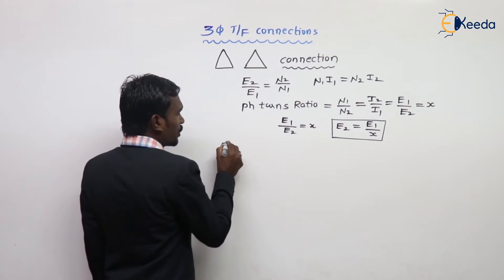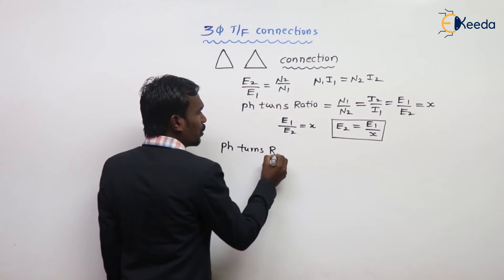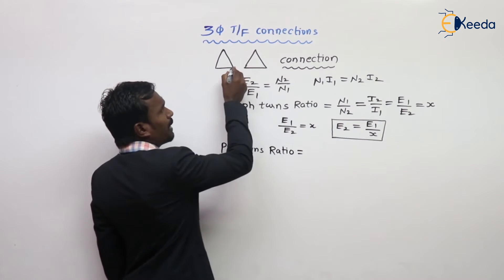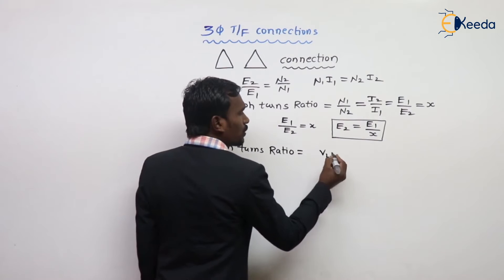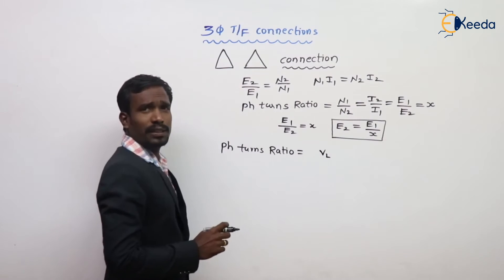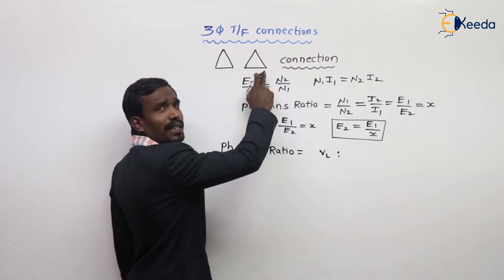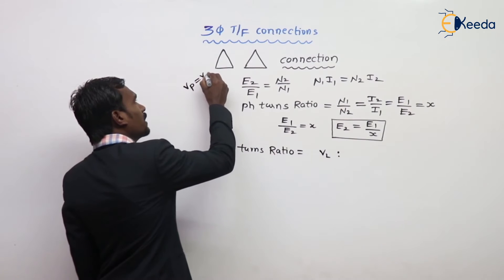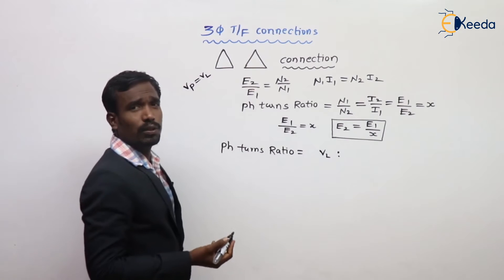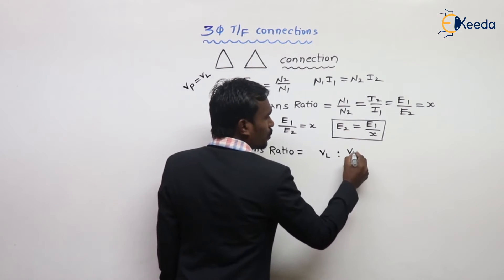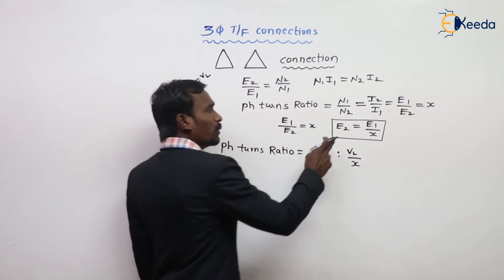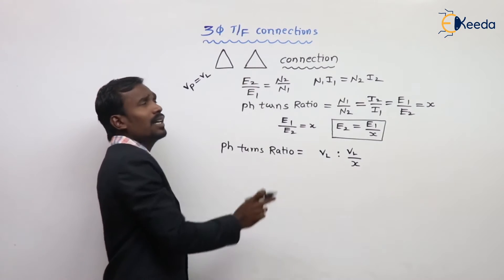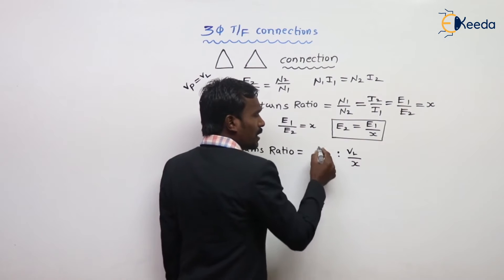For delta-delta phase turns ratio: the phase voltage of primary equals line voltage, and the phase voltage of secondary also equals line voltage, because in delta-delta, phase voltage equals line voltage. So E2 equals E1 upon X.